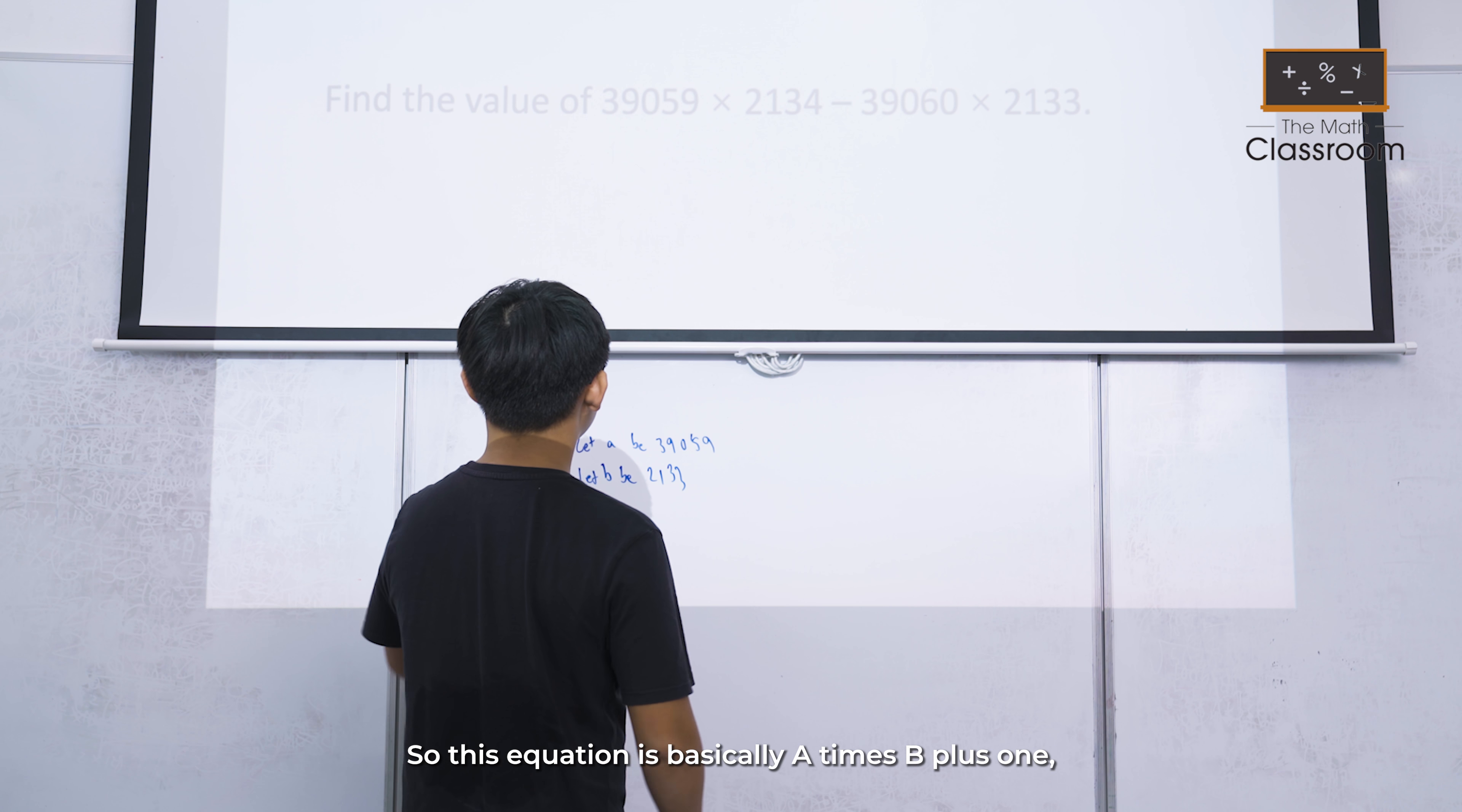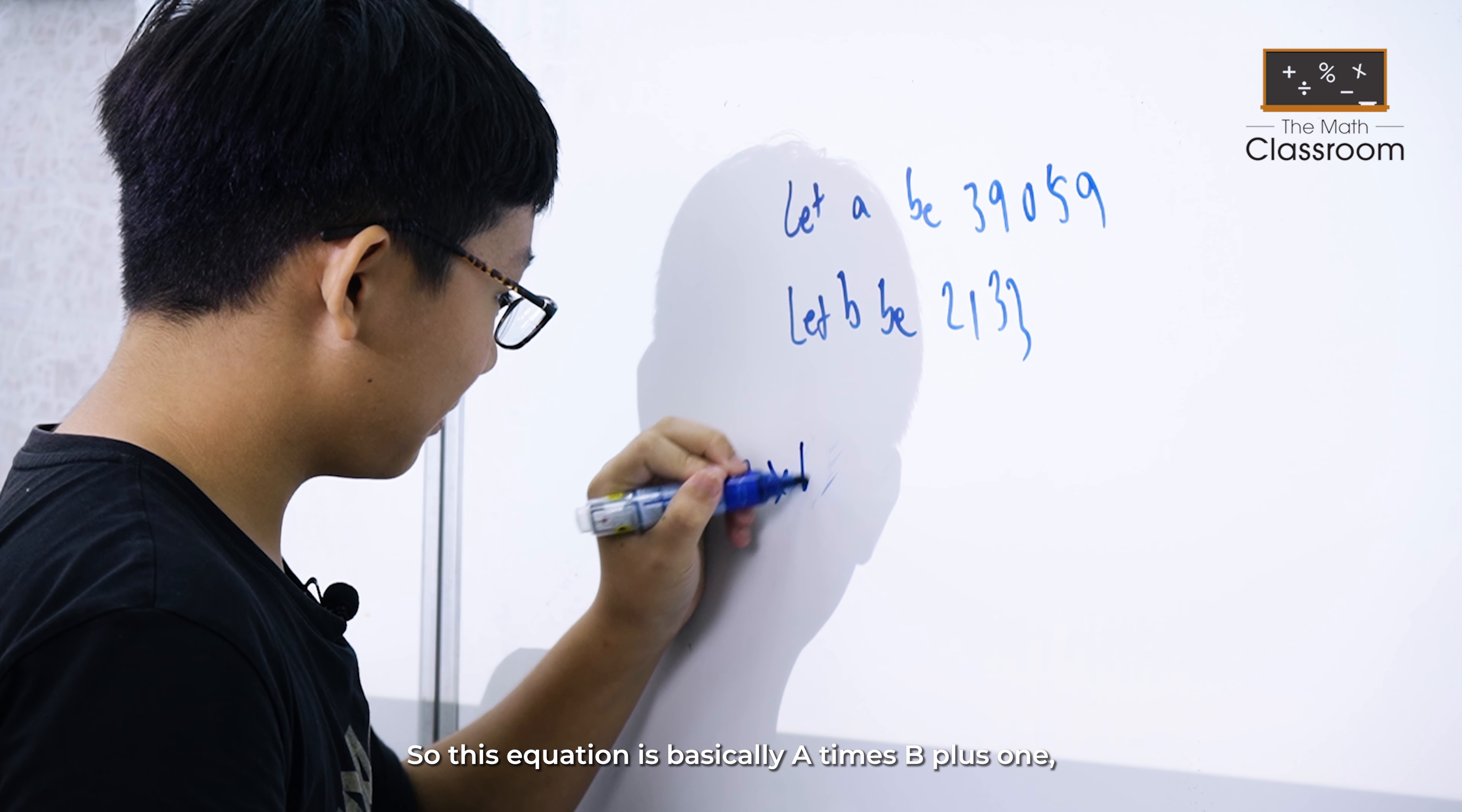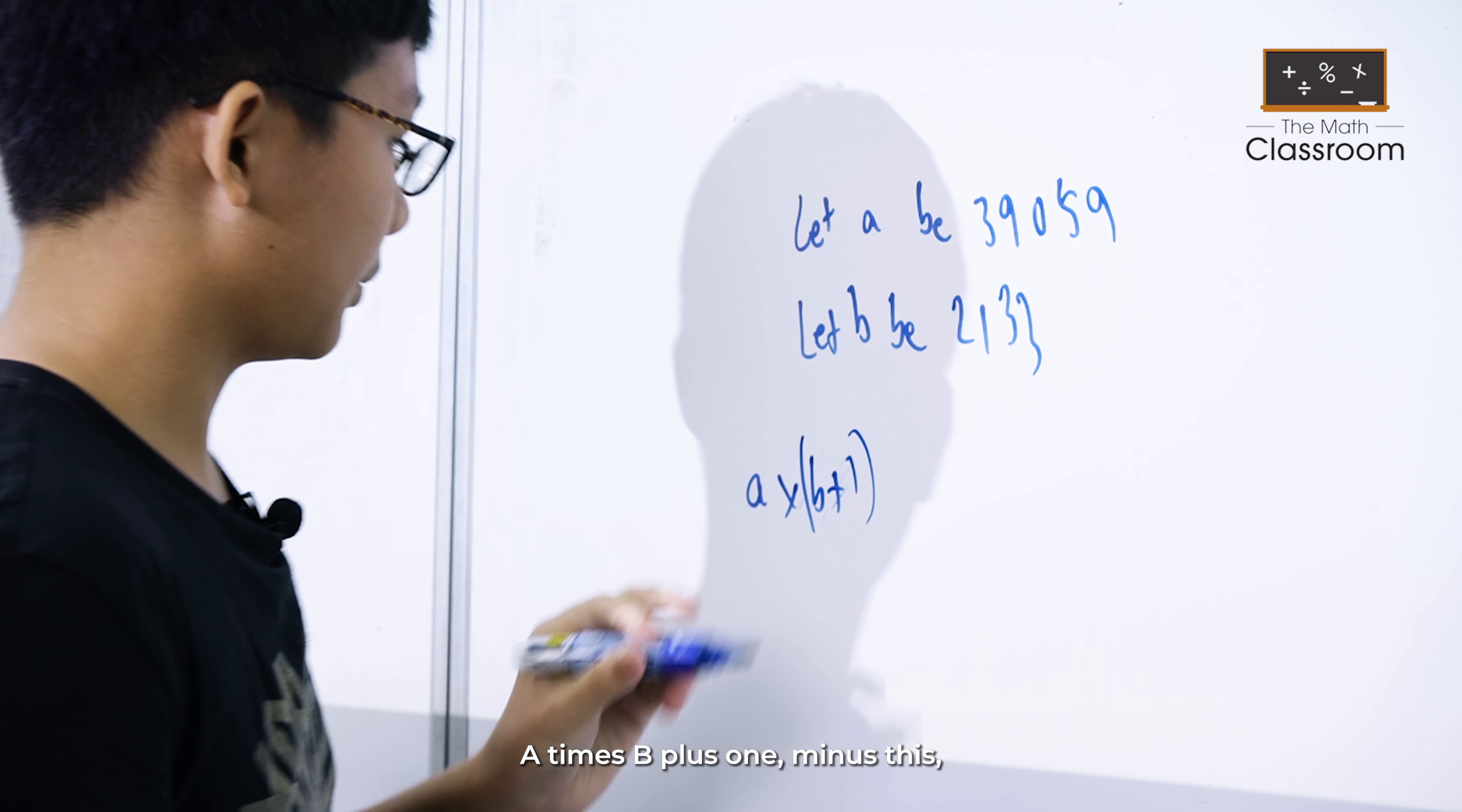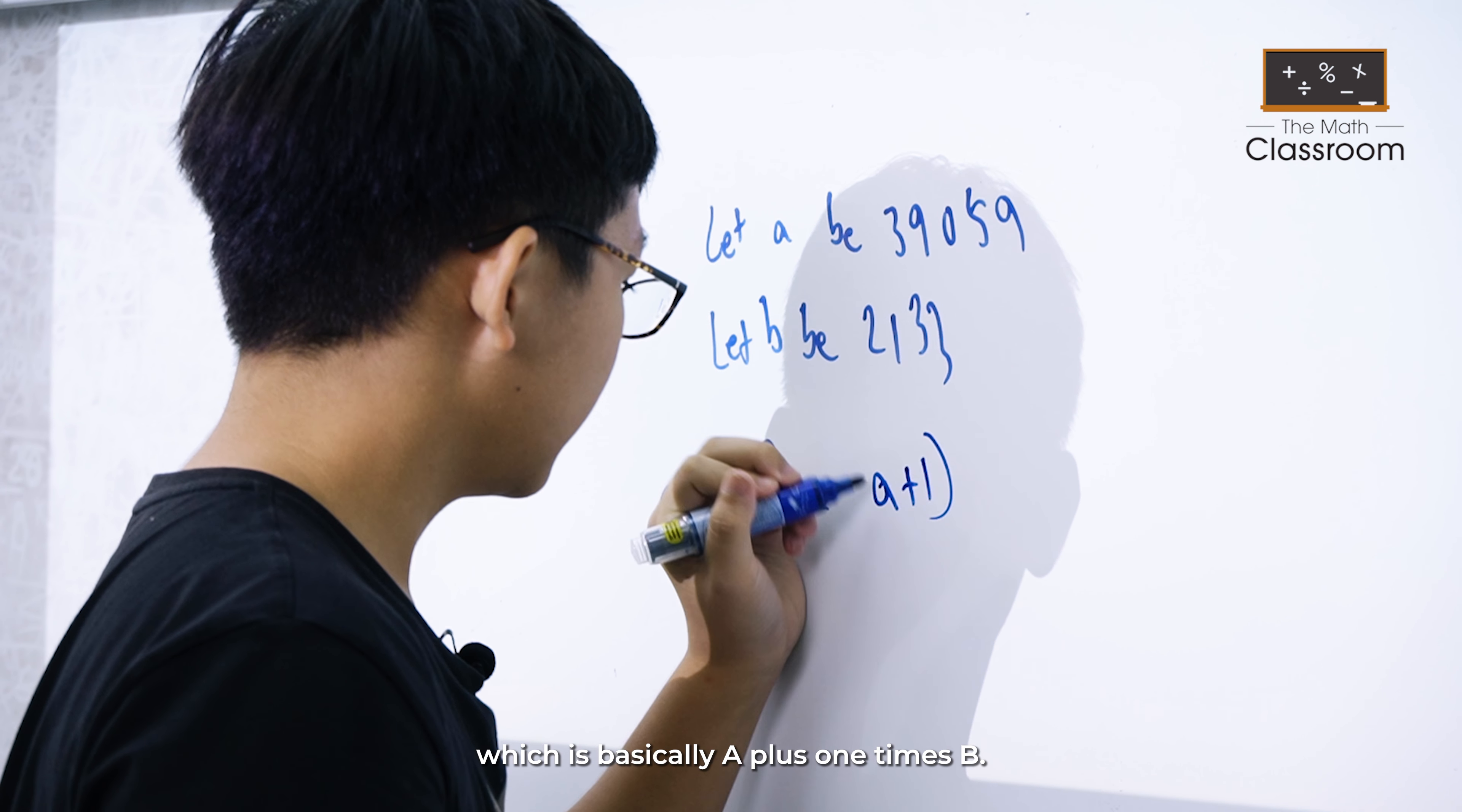So this equation is basically A times (B plus 1). This is A times (B plus 1) minus (A plus 1) times B.